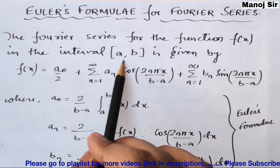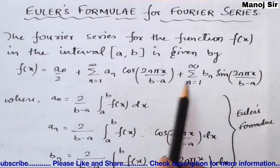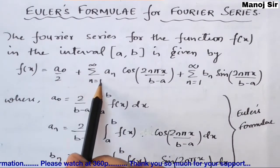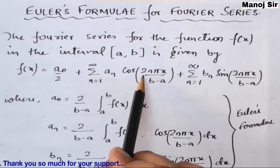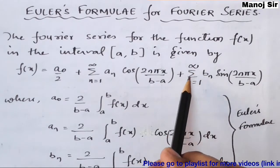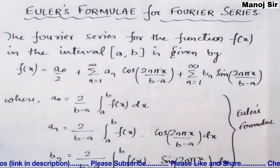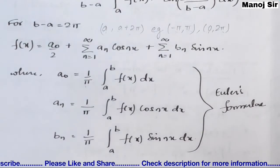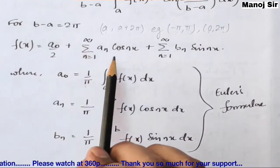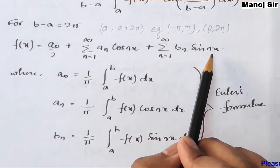In such cases, substituting b - a = 2π into the Fourier series, the 2π terms cancel, giving: f(x) = a₀/2 + summation n=1 to infinity of aₙ cos(nx) + summation n=1 to infinity of bₙ sin(nx). This is the required Fourier series when b - a = 2π.